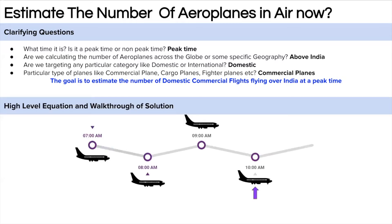Before jumping into the solution, let me explain an important concept. Suppose India has a maximum flight duration of 3 hours. At 10 AM, all the flights that took off after 7 AM will still be in the air, because those are 3-hour journeys — they will land after 10 AM. So all those flights will be in the air at 10 AM. You have to understand this concept.